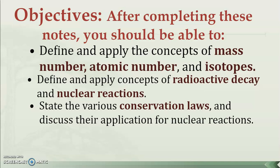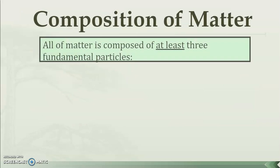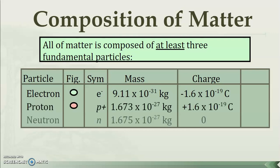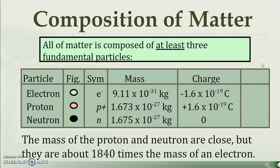Conservation of mass, conservation of charge, conservation of energy, conservation of nucleons — all those different things. All matter is composed of three fundamental particles: the electron, the proton, and the neutron. Electrons and protons have charge; electrons are really small, protons are a lot bigger. The proton and neutron are about the same size, and the neutron has no charge. The electron and proton have the same magnitude of charge — electrons negative, protons positive.